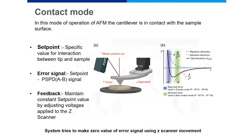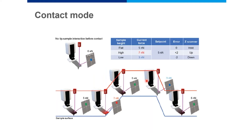Let's look at how the tip drags across the sample surface in contact mode. We first align the laser into the PSPD detector exactly at center, with the tip in the air and not interacting with the sample. Then we land the tip onto the sample. The cantilever bends and instead of the laser hitting the center of the photodetector, there is a vertical movement of the laser spot.